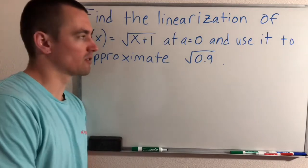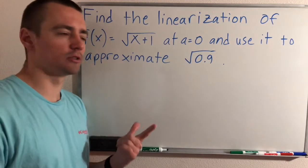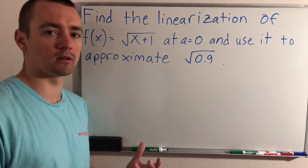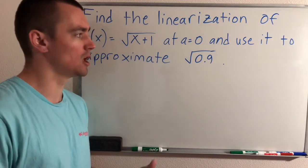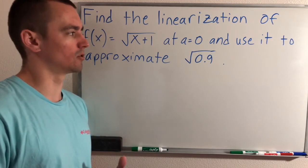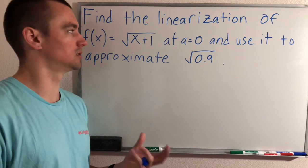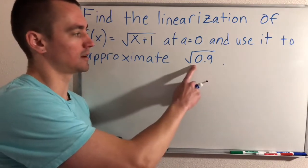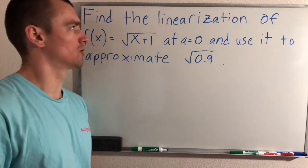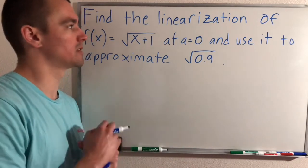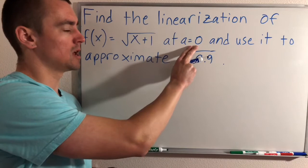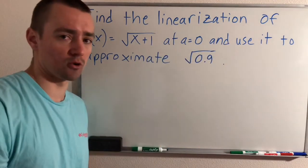Hey guys, Jake here coming at you with another math problem today. Yesterday we talked about linearization and how to use it to find a linear approximation for a function. Today I'm going to be showing you one of the uses for this — which is to use linearization to estimate complicated values, like the square root of 0.9. We're going to find the linearization of f(x) = √(x+1) at a = 0, and then use that to approximate √0.9.